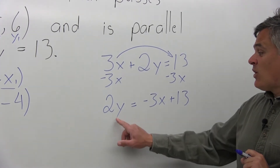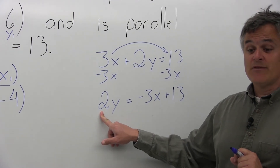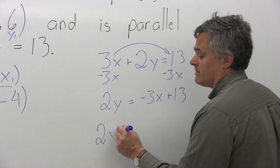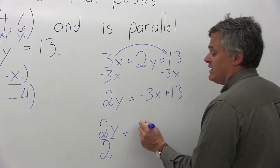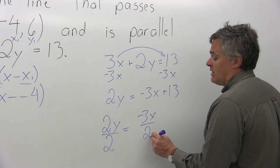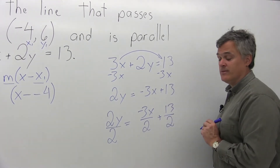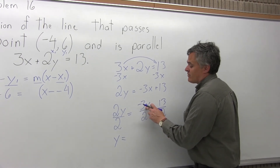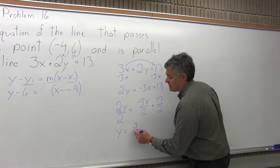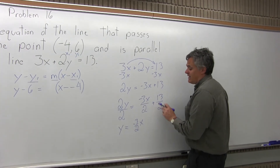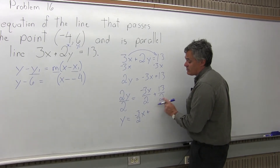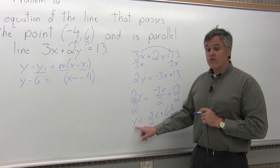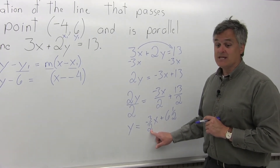That's better, but it's still 2y equals, not y equals. So I divide everything by 2 on both sides. That gives 2y over 2 equals negative 3x over 2 plus 13 over 2. The 2's cancel on the left, giving y equals. The negative 3x over 2 can be written as negative 3 halves x. The 13 over 2 can stay as 13 over 2, or written as 6.5. Now that it's solved for y, the coefficient of x — negative 3 halves — is the slope.